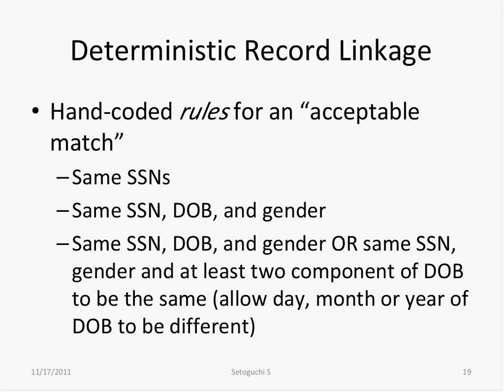Can you link two records without personal identifiers like social security or Medicare ID? The answer is yes — researchers have done it with good validity. Records can be linked using multiple non-unique identifiers such as date of birth, gender, admission date, discharge date, diagnosis, procedure, and provider information. The key is to find a combination of linkage variables that makes a record unique.